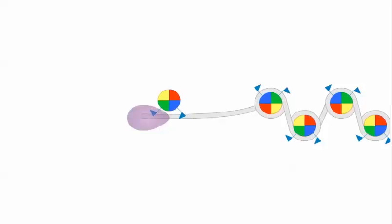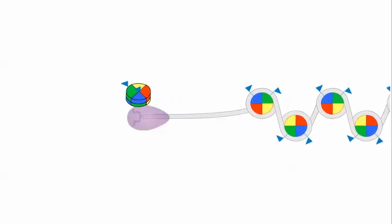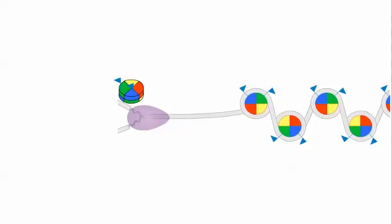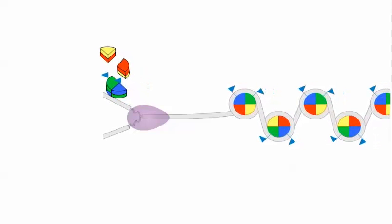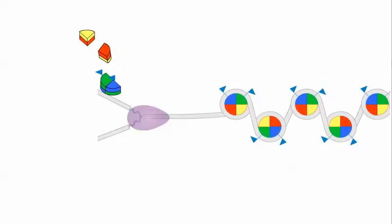After the DNA is copied, the two daughter strands are rapidly reassembled into nucleosomes. The old histones are carefully distributed between the two new DNA strands, and new histones are brought in to fill in the gaps.